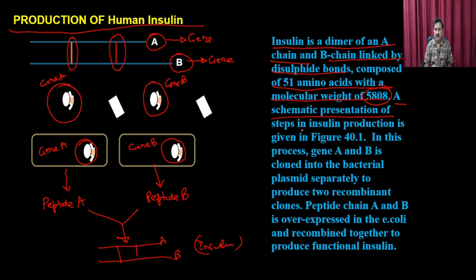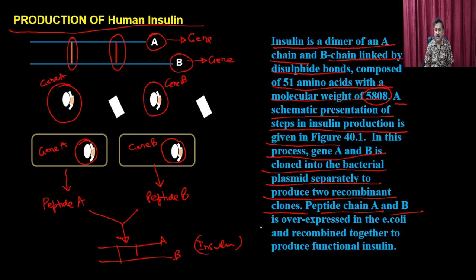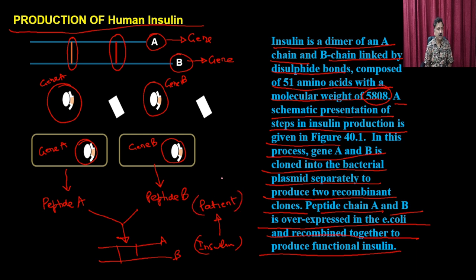The gene A and gene B are cloned into bacterial plasmids separately to produce two recombinant clones. Peptide chain A and B are overexpressed in E. coli and combined together to produce the functional insulin, which can be given to patients for the treatment of diabetes.